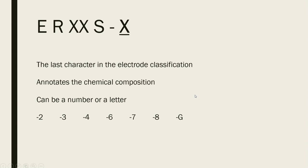The last part of the classification tells us the chemical composition of the electrode — very similar to the welding electrodes from SMAW, where those would also tell us the chemical composition. For GMAW, you're going to see one of the following: dash 2, dash 3, dash 4, dash 6, dash 7, dash 8, or dash G.